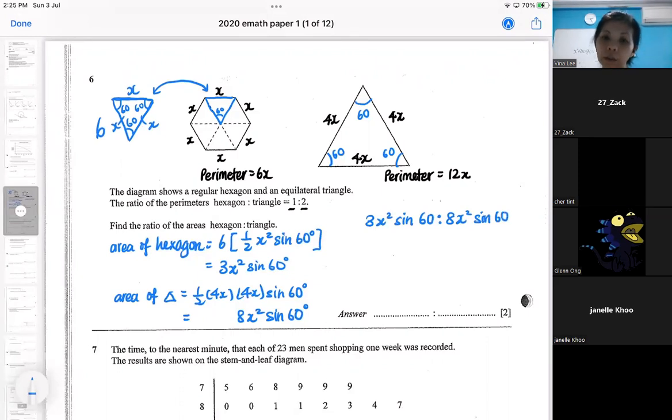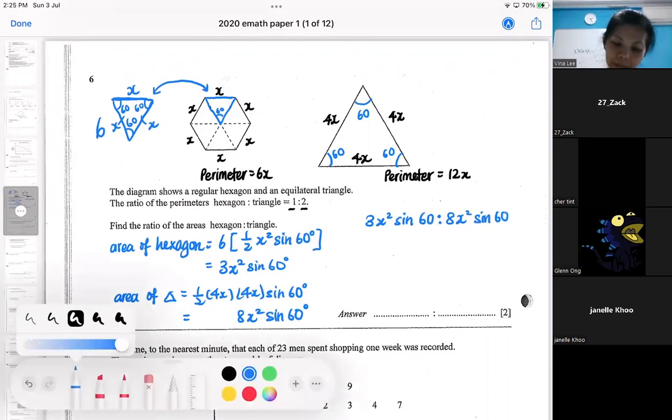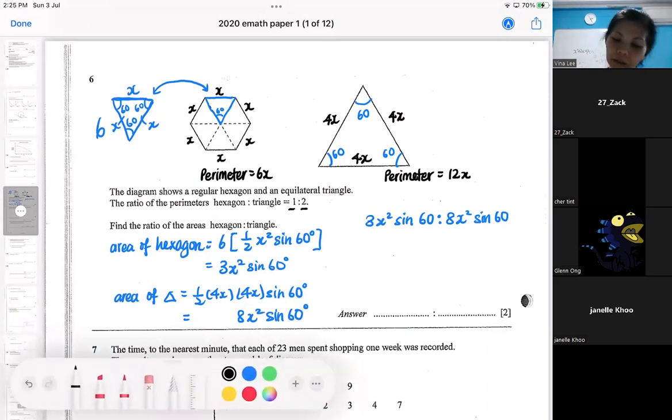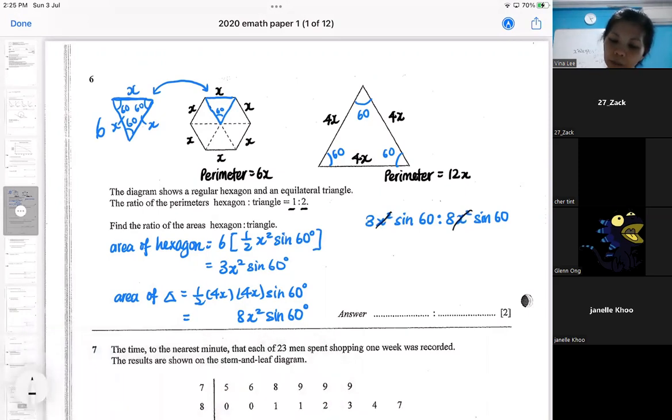So if I'm going to take the ratio of the area, I end up cancelling away. Sorry, I cancelled the wrong thing. So I should be cancelling the x squared. I should be cancelling the sine 60. So I'm left with 3 is to 8. So that is the use of algebra for this question.